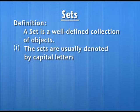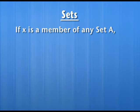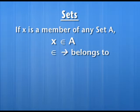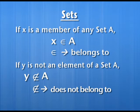Sets are usually denoted by capital letters A, B, C and elements of the set are denoted by small letters a, b, c. If x is a member of a set — that is, x is an element of set A — then we write x belongs to A. This is a Greek symbol used to write 'belongs to,' and if any element y does not belong to the set, we write using this symbol to represent 'does not belong to.'